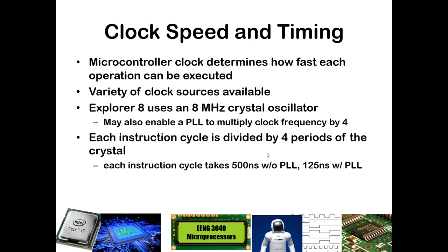In this slide set, we're going to look at the timing of code in assembly, specifically on our Explorer 8 trainer board, which uses an 8 MHz crystal oscillator as the clock source for our microcontroller. There are many different clock sources available, but the external crystal oscillator is what we will use. There is also an option to use what is known as a phase-locked loop (PLL), which will allow us to multiply the frequency of our crystal oscillator by 4. So while we have a nominal 8 MHz crystal oscillator, we can actually have oscillation at 32 MHz from the PLL. Every instruction cycle takes 4 periods of the clock, whether using the PLL or not.